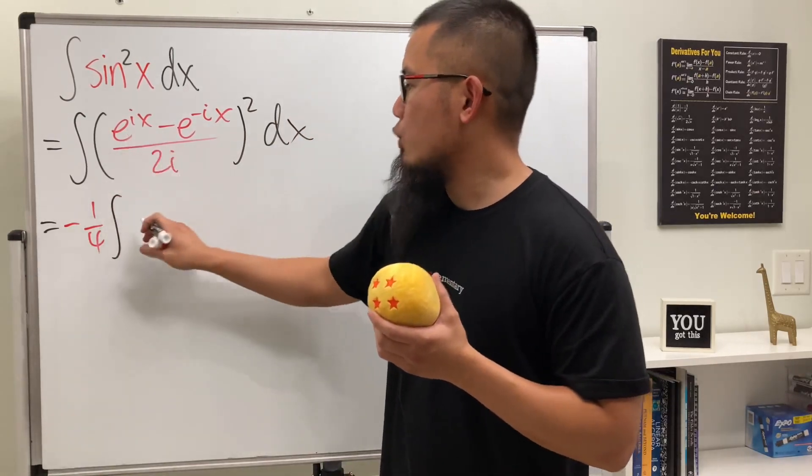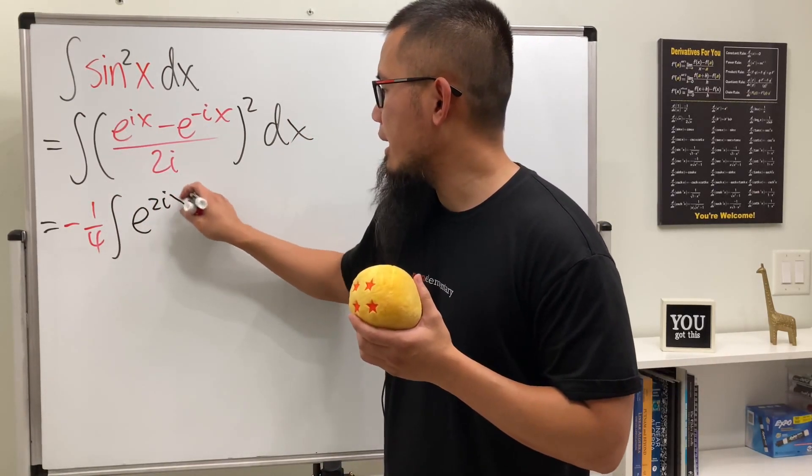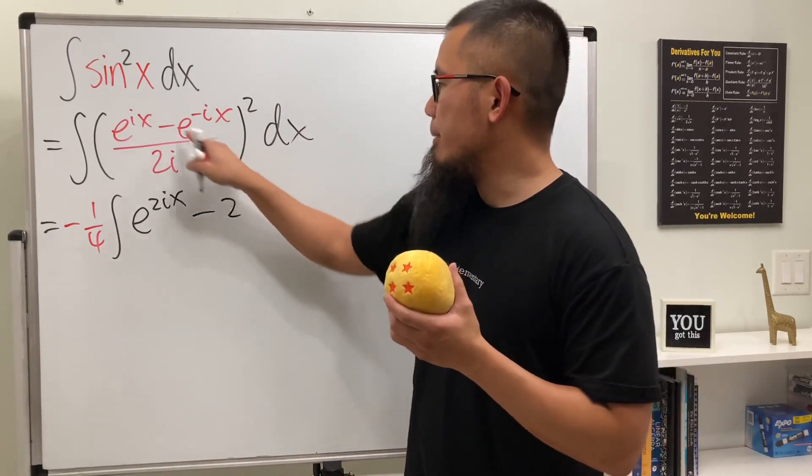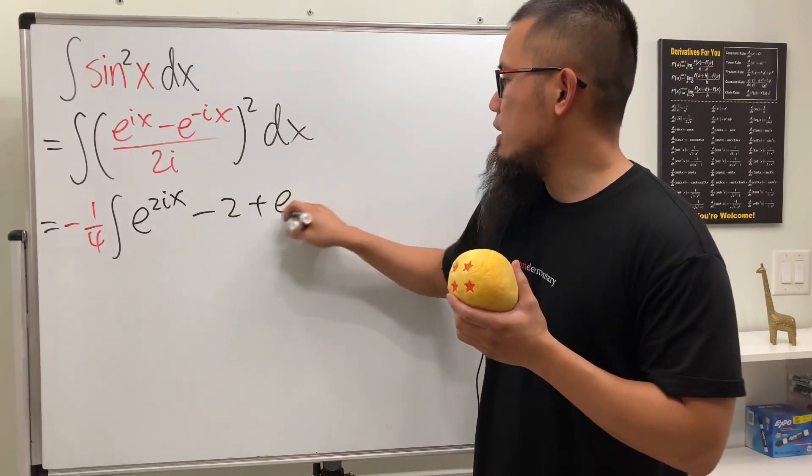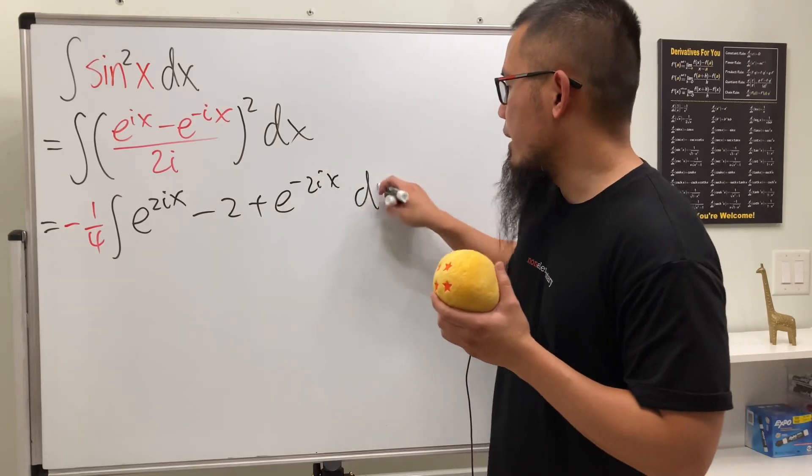And then integrating this thing squared, which is going to be e to the 2ix, and then minus 2 times this and that, which is 2, and then plus this thing squared, which is e to the negative 2ix. And now we can integrate.